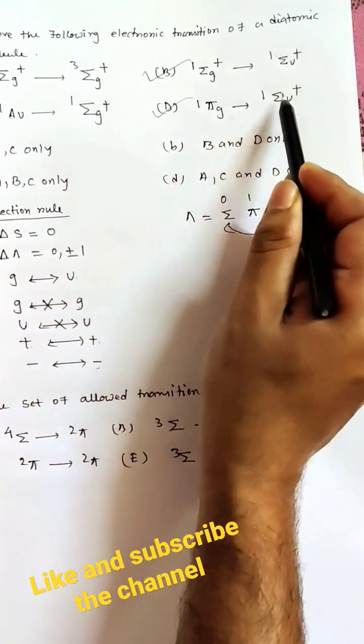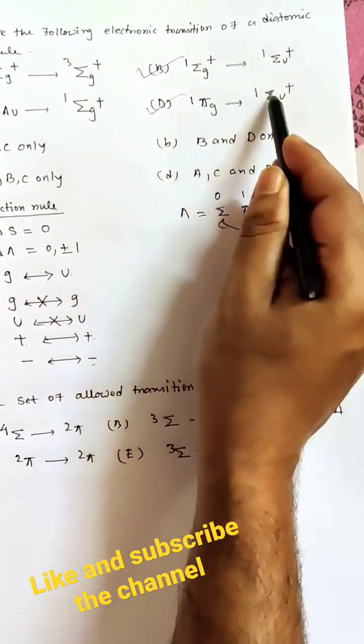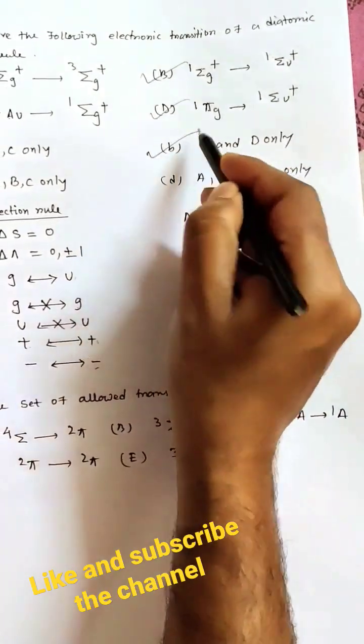The lambda value difference is plus 2, so C cannot be the answer. For option D, the l value difference is 1, from 1 to 1, g to u. The correct answer is B.